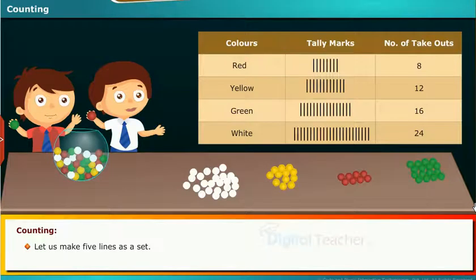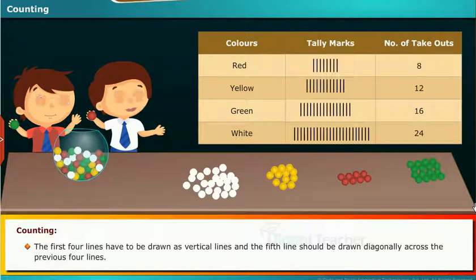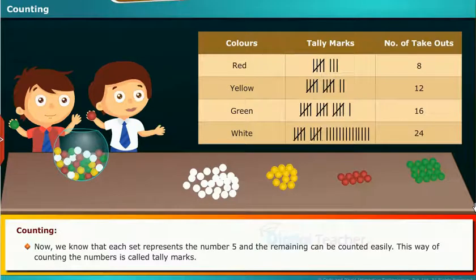Let us make 5 lines as a set. The first 4 lines have to be drawn as vertical lines and the 5th line should be drawn diagonally across the previous 4 lines. Now, we know that each set represents the number 5 and the remaining can be counted easily. This way of counting the numbers is called tally marks.